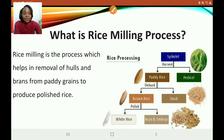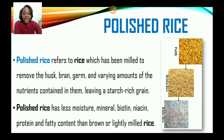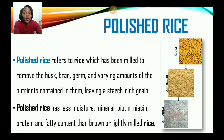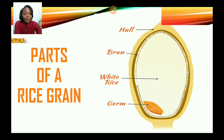Polished rice refers to rice which has been milled to remove the husk, bran, germ, and varying amounts of the nutrients contained in them, leaving a starch-rich grain. Polished rice is mostly rich in carbohydrates unless it has been enriched or fortified after processing. Polished rice has less moisture, minerals, biotin, niacin, protein, and fatty content than brown or lightly milled rice.